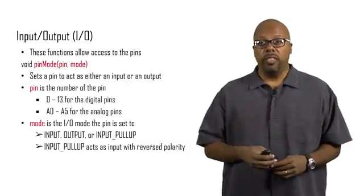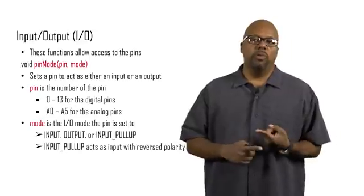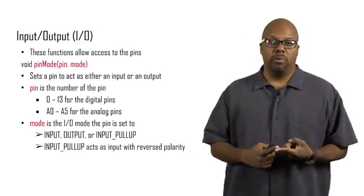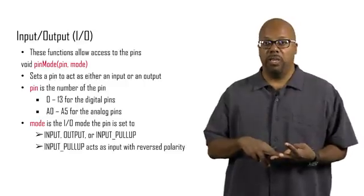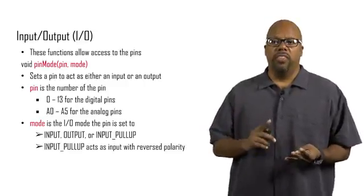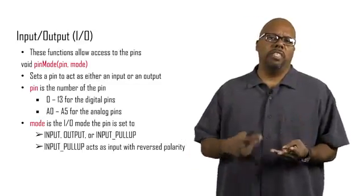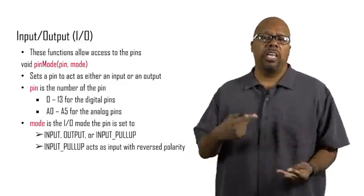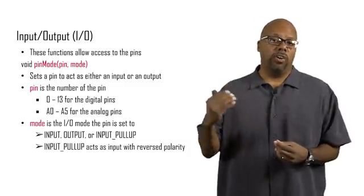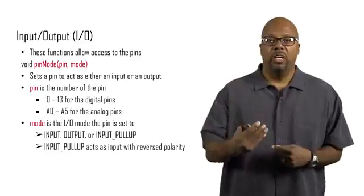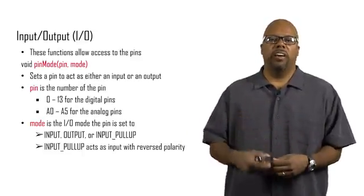The mode, which is the second argument, there are three possible modes. The first mode is INPUT, that means you want this pin to be an input pin. The second mode is OUTPUT, which means you want it to be an output pin. The third mode is INPUT_PULLUP. Input pull-up basically makes the pin act like an input, but it reverses the polarity. So when they drive 0 volts on it, when they drive it low, you read it as a high. Or when they drive a high, you read it as a low. So it's a reverse polarity input.